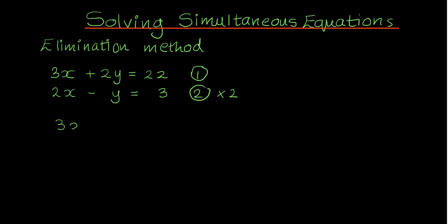So the first equation remains the same: 3x plus 2y equals 22. The second equation becomes: 2x times 2 is 4x, minus y times 2 is minus 2y, and 3 times 2 is 6. Now the coefficients of y have the same absolute value — the absolute value of 2 is 2, and the absolute value of minus 2 is also 2.